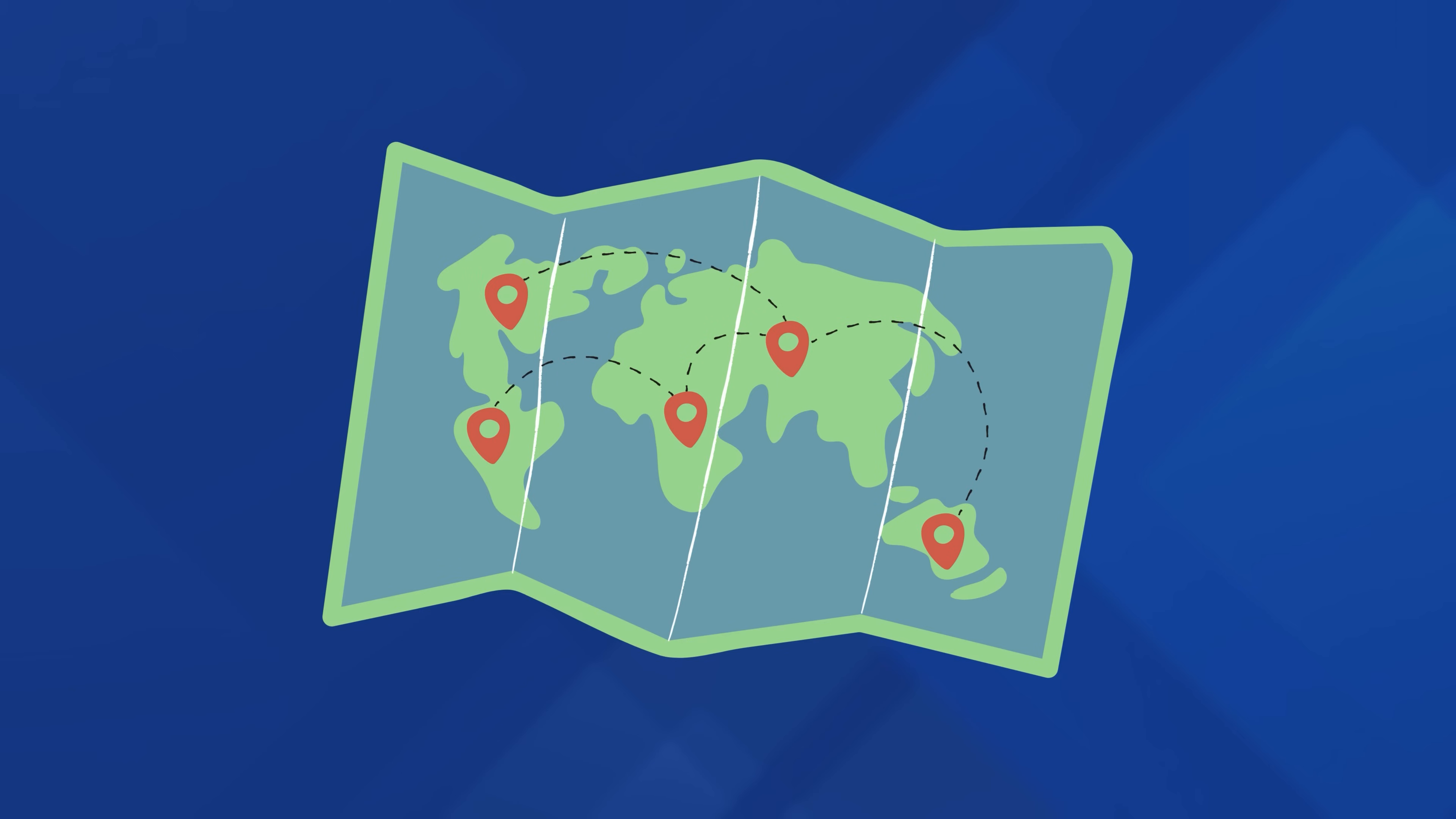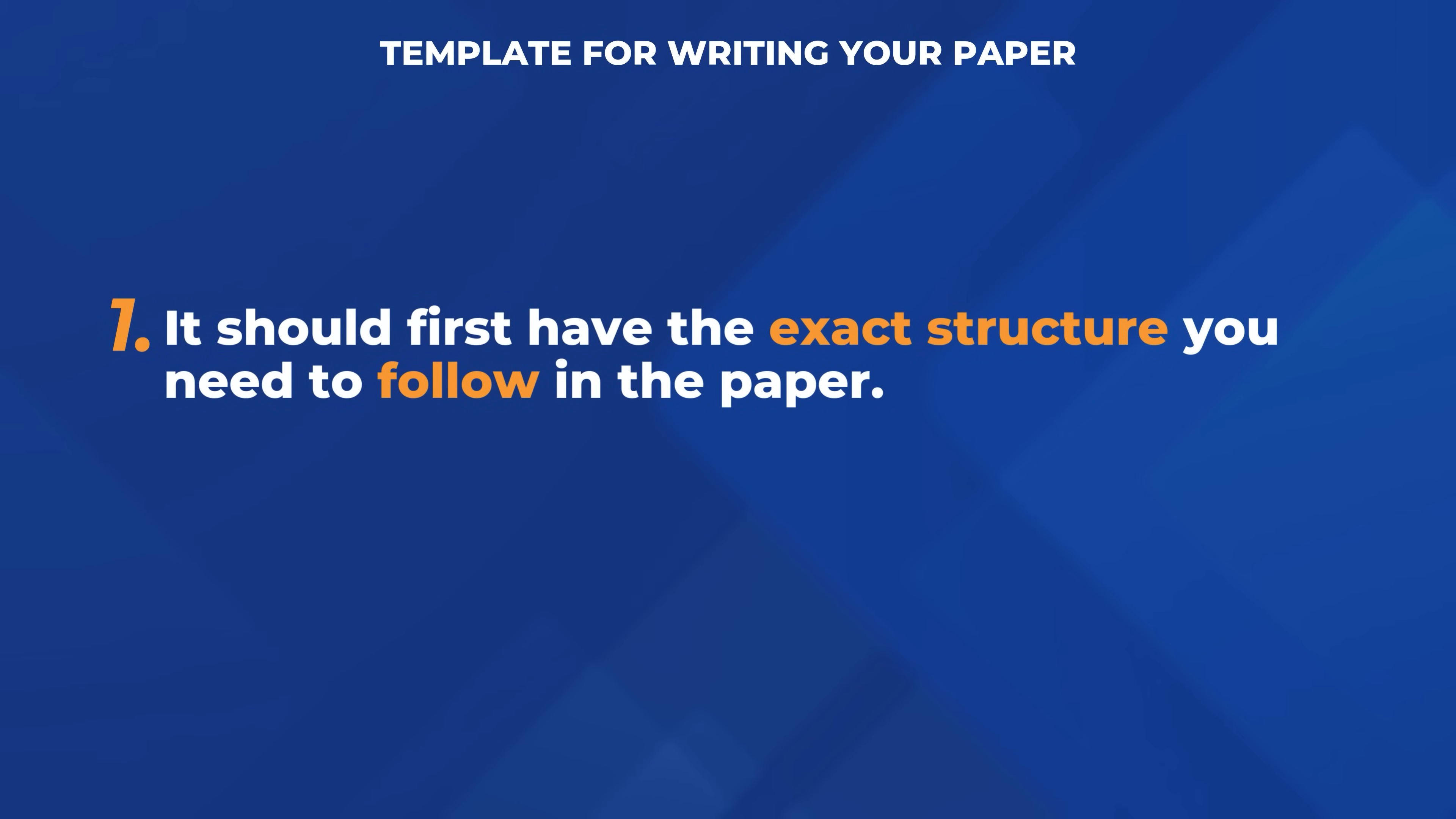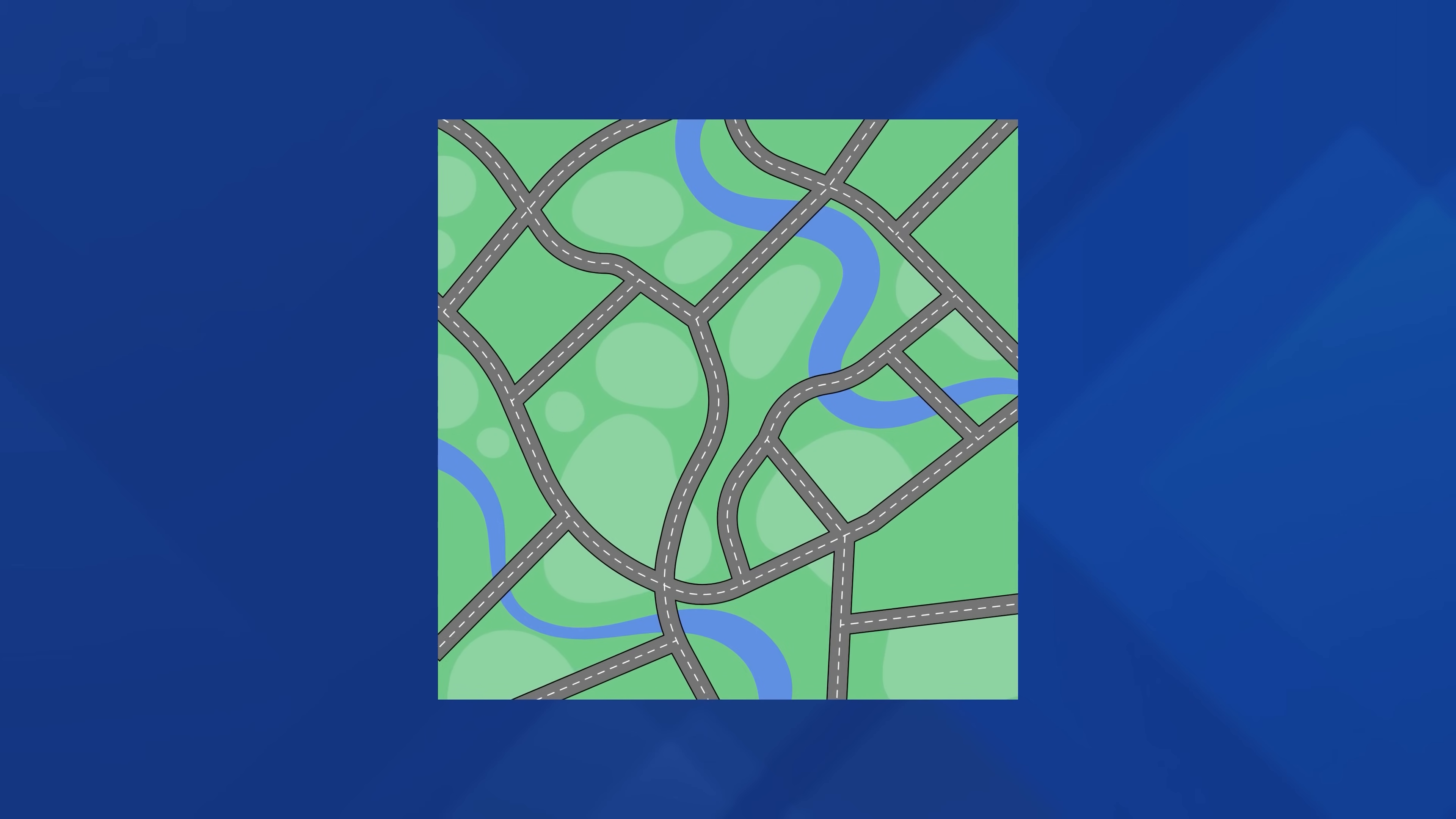So writing a paper needs to feel like that second trip, a visit to a familiar neighborhood. So what you need is a proven template for writing your paper. Think of that template as a map. It needs two key elements. It should first have the exact structure you need to follow in the paper. This is like the roads and the main landmarks in a city.